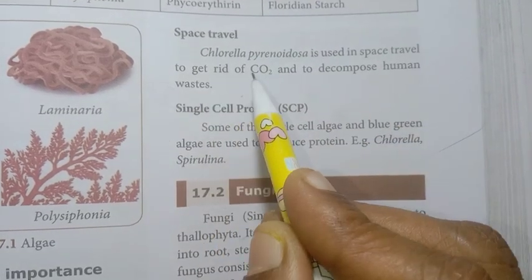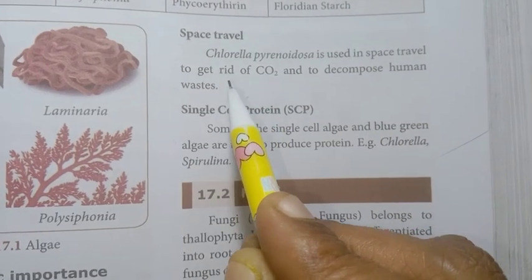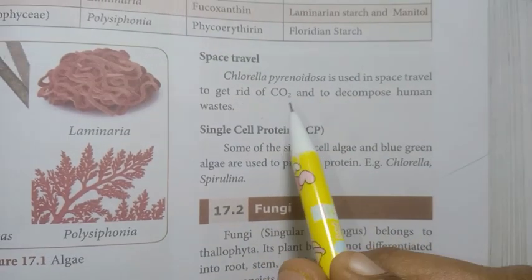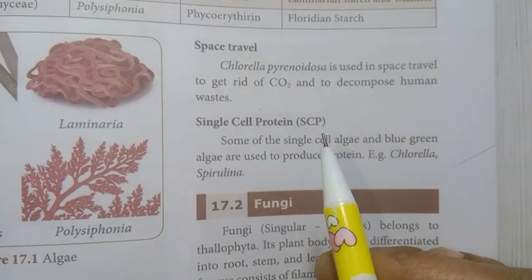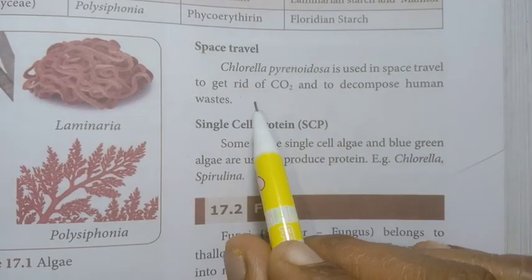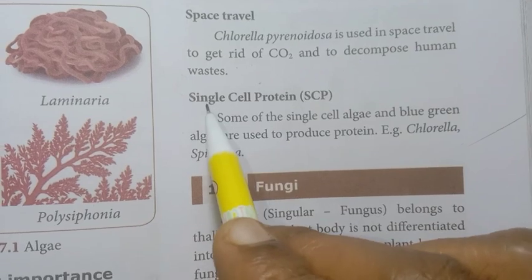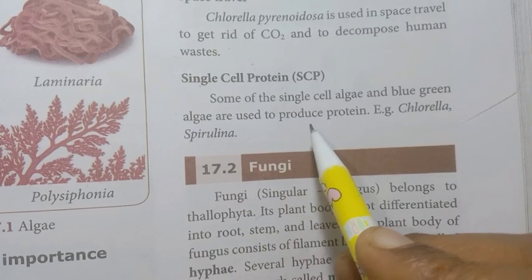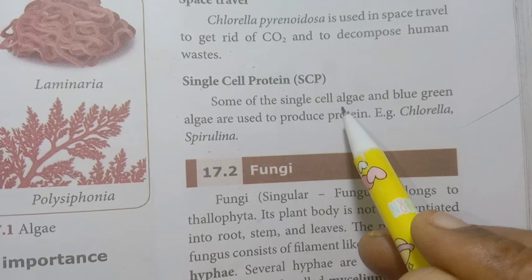Chlorella pyrenoidosa is used in space travel to remove CO2 and to decompose human waste. Single cell algae such as Chlorella and Spirulina are used to produce single cell protein.